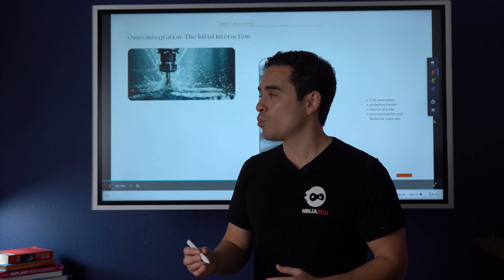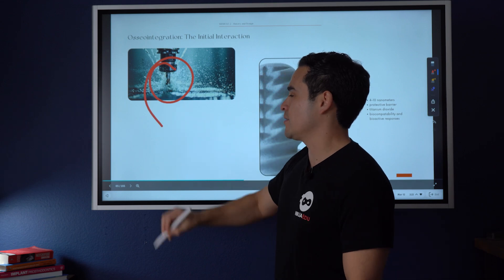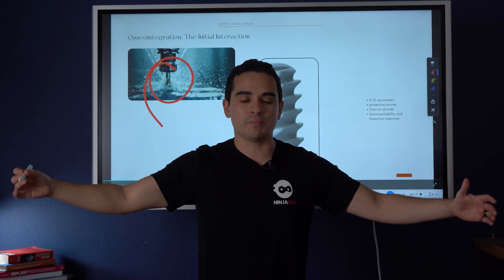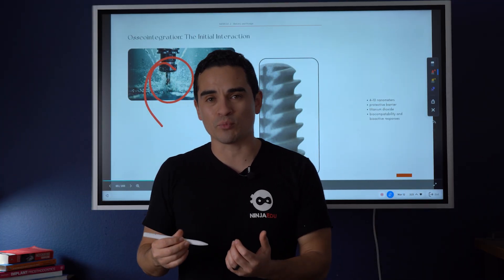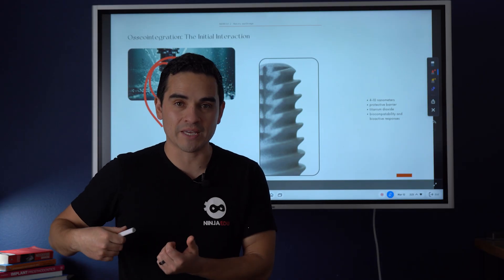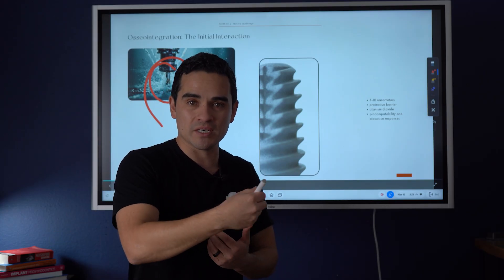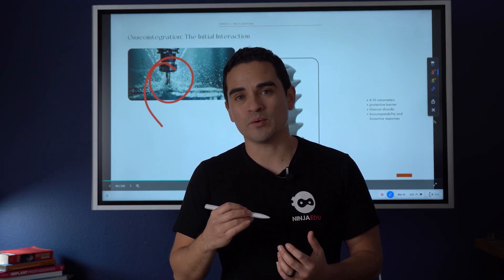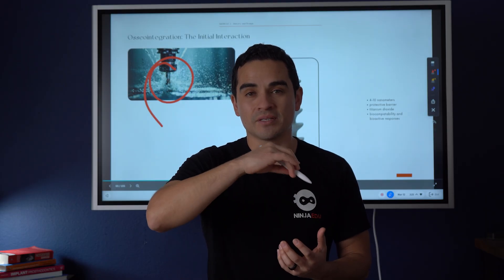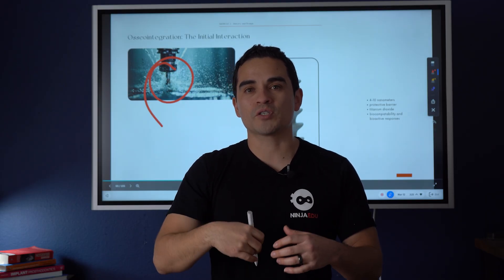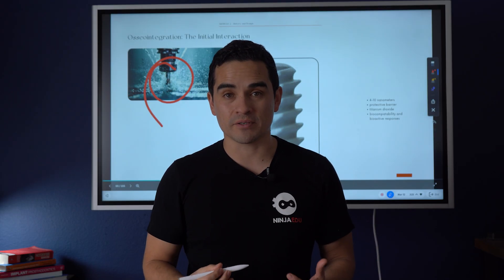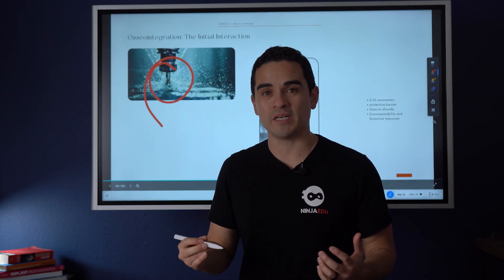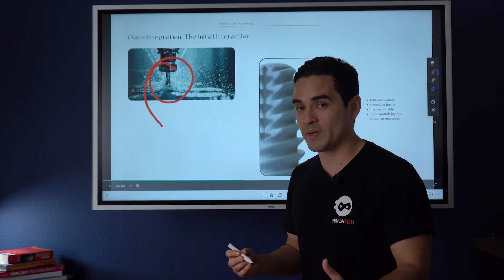It all starts when the implant comes off the CNC machine. You have this big CNC machine in an implant factory, and you have these titanium rods that get fed into the machine. That machine basically carves out an implant. So when that titanium rod gets carved, as the layers get carved out, they expose fresh new layers of titanium or titanium alloy. And as soon as that fresh layer of titanium gets exposed to the air, something really special happens.